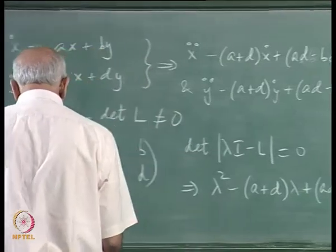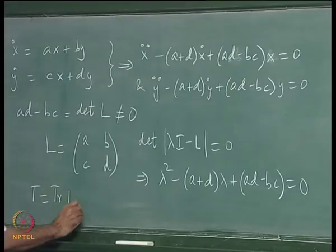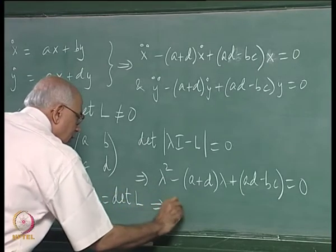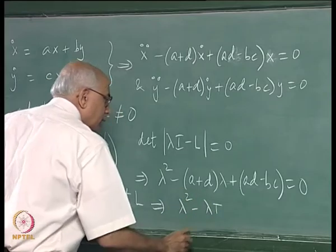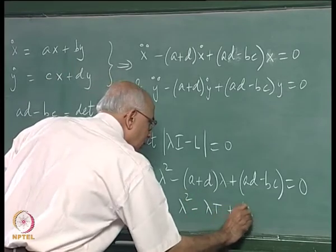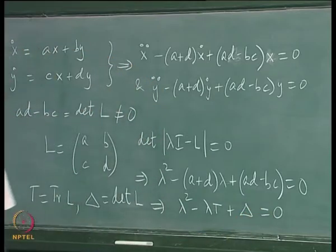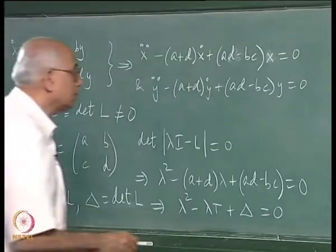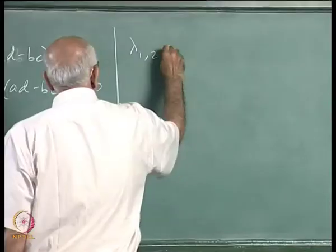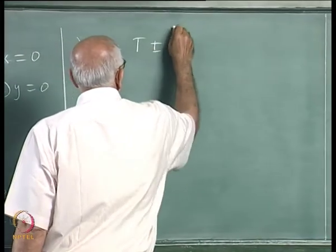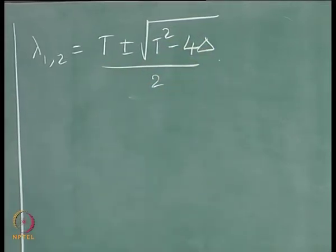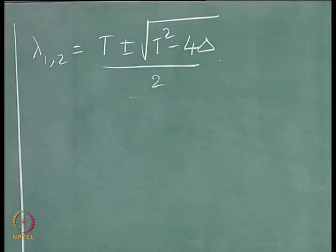Setting T equal to trace of L and δ equal to determinant of L, the eigenvalues satisfy λ² - Tλ + δ = 0. So the eigenvalues are functions of the trace and the determinant of the matrix, giving λ₁,₂ = [T ± √(T² - 4δ)] / 2. The solutions are exponentials in λ₁ and λ₂.